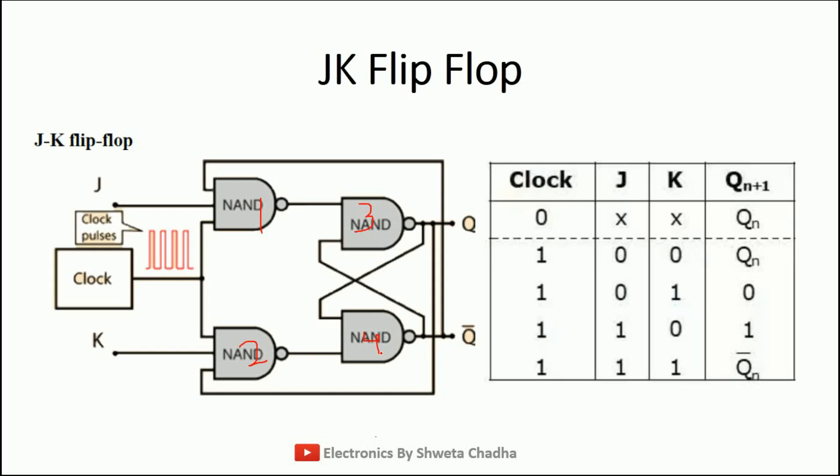Now, the truth table. When the clock signal is 0, it does not matter what is the value of J and K — that means don't care term. The output will remain the previous output that we were having, that means no change condition. The previous output will remain the next output as well.